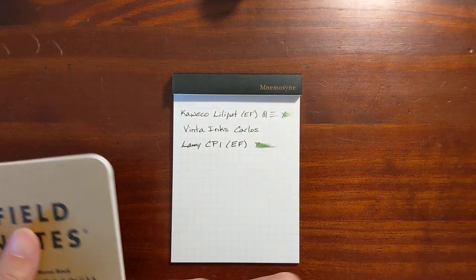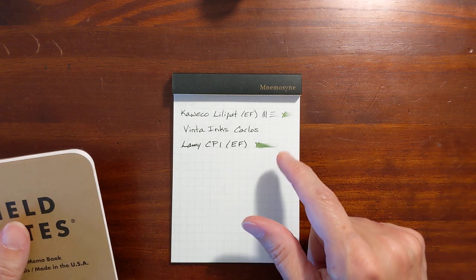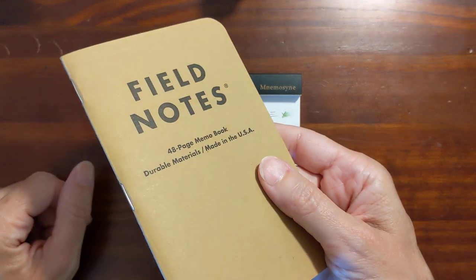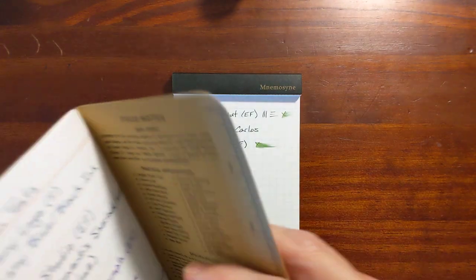This one is the least prone to feathering. When you write a fine line it stays nice and crisp so I gave it a try in my Field Notes.